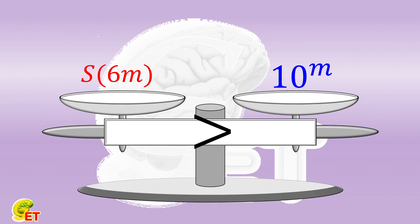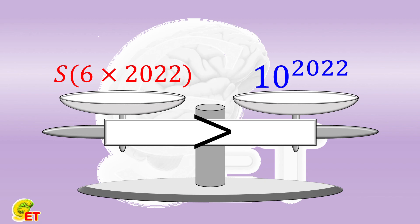When m is equal to 2022, we obtain that S of 6 times 2022 is bigger than 10 to the 2022 power.